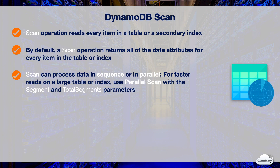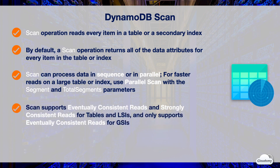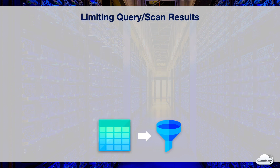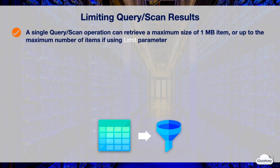The scan operation can logically divide a table or index into multiple segments to allow workers to scan segments in parallel for faster performance on a large table or index. You should use parallel scan by providing the segment and total segments parameters. The scan operation supports eventually consistent reads and strongly consistent reads for tables and LSIs. It only supports eventually consistent reads for GSIs.